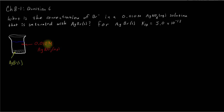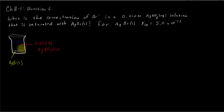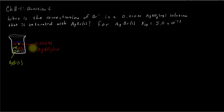Here in our beaker, we've got a solution of 0.010 molar silver nitrate dissolved in water. At the bottom of the beaker, we've got a solution that is saturated with solid silver bromide — saturated means we have excess undissolved solid, and some of this solid has dissolved. Because all nitrates are soluble, the silver nitrate dissociates, giving us silver cations and nitrate anions. It's also possible that a little bit of the solid silver bromide dissolves to give us some silver and bromide in solution, which hook back up to re-precipitate, giving us an equilibrium.